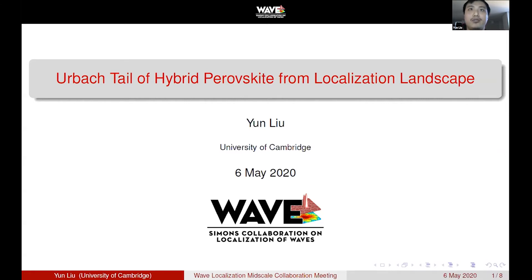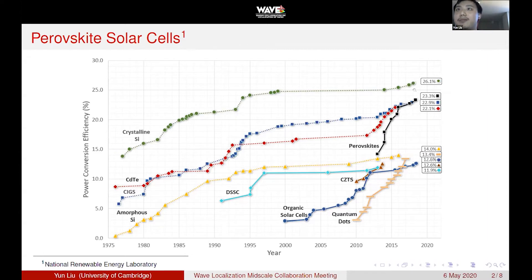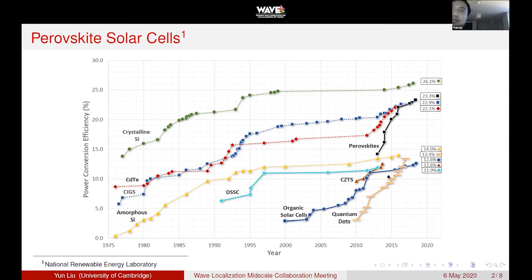So why are we interested in perovskite materials? Here is a solar cell efficiency chart versus time. On the y-axis is the solar cell efficiency for different technologies, and the x-axis is time. You can see that perovskite is the black curve on the right-hand side — it has seen a very rapid rise in efficiency over the last less than 10 years, rising to efficiency close to that of silicon. The theoretical efficiency for a single junction solar cell is only 33 percent, so we are really doing very well in a short period of time. There's a lot of interest to understand this class of materials for solar cell and other optoelectronic applications.